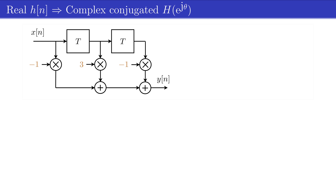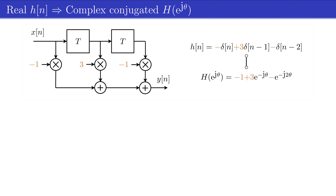We will use this simple FIR example to show that the frequency response is a complex conjugate symmetric function when the impulse response — which represents the filter coefficients of the FIR filter — consists of real numbers. From the realization scheme, it follows that the impulse response consists of three delta functions multiplied by the real numbers minus 1, plus 3, and minus 1 respectively. By using the definition of the frequency response, we obtain an expression consisting of a weighted sum of complex exponents. These two expressions form a Fourier pair, so when we know one, we can evaluate the other.